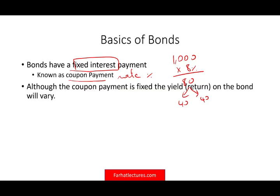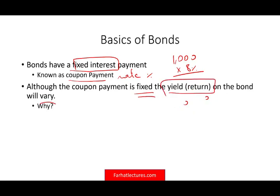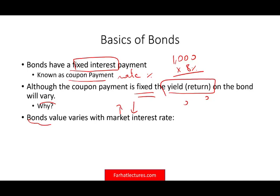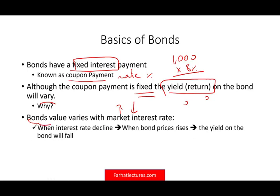Although the coupon payment of $40 is fixed, the yield on the bond will vary. Why will the yield vary? Because the bond value varies with the market interest rate — the bond might go up or might go down as time goes by, mainly because of changes in interest rate. When the interest rate goes down and declines, bond prices go up.